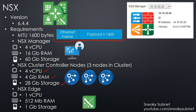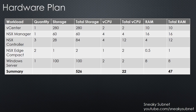Now let's take a look at the overall hardware plane, which I already showed you in the first video. Basically it summarizes the software component requirements. At minimum you need 526 gigs of storage, 22 vCPUs, and 47 gigs of RAM.